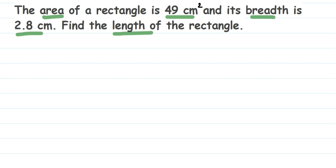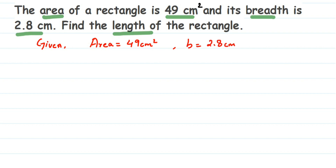So let's write down what is given here. We have given two things. Area of rectangle — I am just writing area — is 49 cm². And they have also given the breadth; I am writing small b. Small b stands for breadth, which is equal to 2.8 cm. Now what we have to find out? We have to find out the length. Now since area is given, we are going to use the area formula. So what is the area of rectangle formula? Area of rectangle is length into breadth.